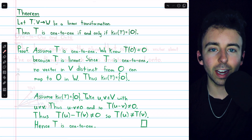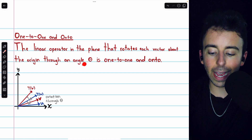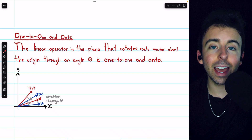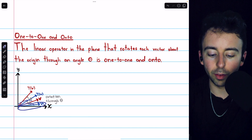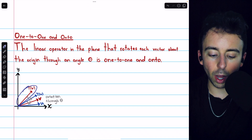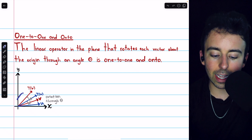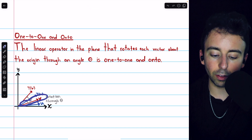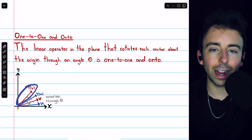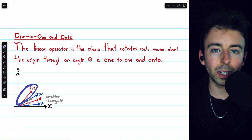The linear operator on ℝ² that rotates each vector about the origin through an angle θ is both one-to-one and onto. It's clearly one-to-one because if we take distinct vectors u and v and rotate them through angle θ, their images will be distinct. It's onto because given any vector in the plane, the vector obtained by rotation of negative θ will map to the original vector under T. So every vector in the plane is the image of some other vector under the rotation transformation.